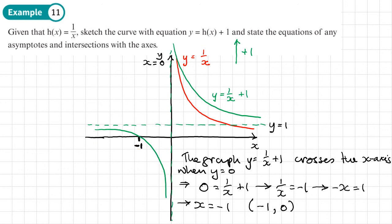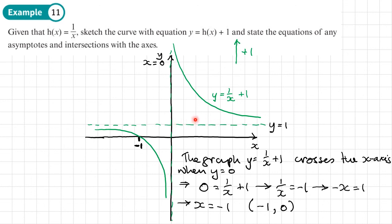When drawing these, draw the original graph and your translation on separate sketches — don't draw them on the same one because it gets confusing. You should now be able to do exercise 4e on pages 74 to 75.